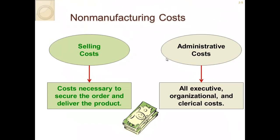There are also non-manufacturing costs. Selling costs are the costs necessary to secure the order and deliver the product. This includes sales commissions to people selling the product, advertising costs, and shipping costs necessary to deliver the product. Administrative costs include all executives — the CEO, CFO, accountants — the accounting structure in your company, clerical, organizational costs, and human resources. Those are all administrative costs.